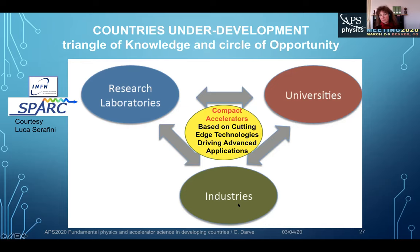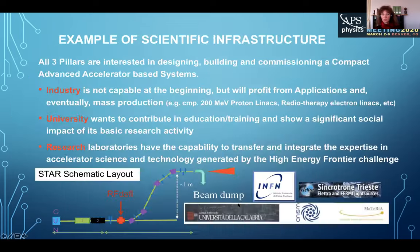I show here the example in Calabria of this project of a compact accelerator called START — 24 meters long — and the possibility to accelerate different electrons and produce, together with university, some research that can then be used for industry. This is mass production further along, but this is a start and an example of how it could evolve.